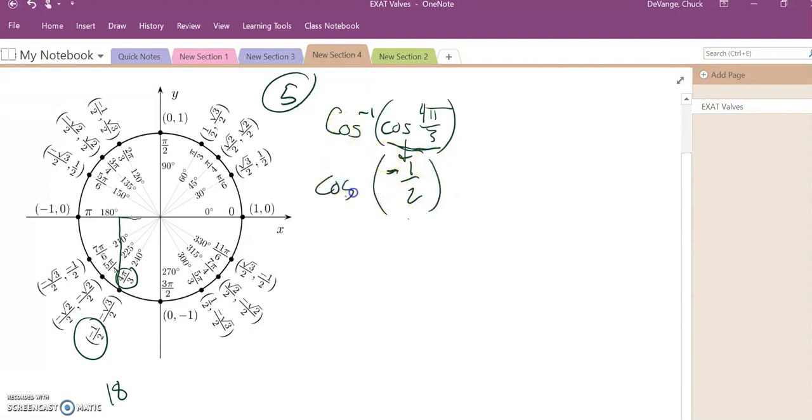Then I want to find the inverse cosine of that. Now the answer is not 4π over 3. What's going on is the negative 1/2. Inverse cosine only returns values from here to here. So there's another value that has that same width of negative 1/2, and it's 2π over 3. So the answer to this is 2π over 3.